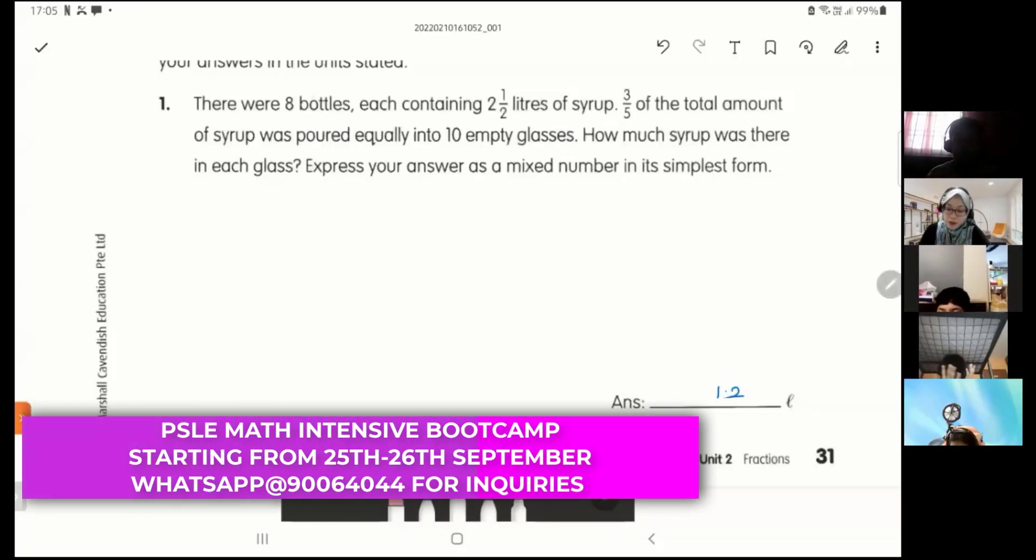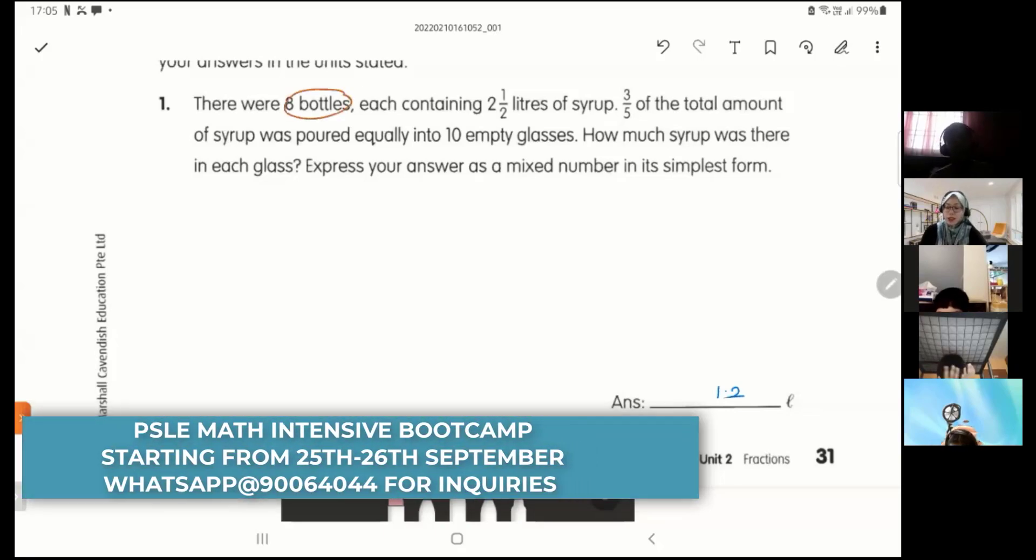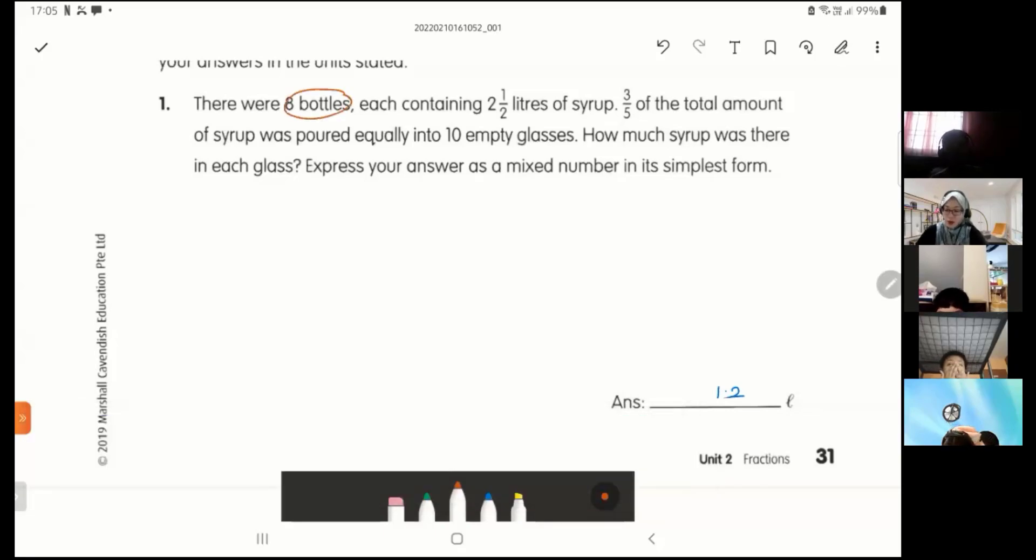There were eight bottles, each containing two and a half liters of syrup. So they say each means one bottle.